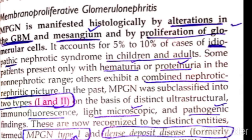Now for membranoproliferative glomerulonephritis (MPGN). The first thing to remember is that it is a mixed form — you have both nephrotic syndrome features and nephritic syndrome features together. In nephritic syndrome there is mainly hematuria (blood in urine) with no protein, whereas in this mixed picture the patient has both hematuria and proteinuria.